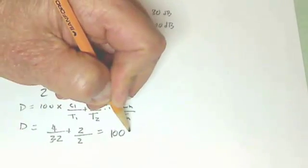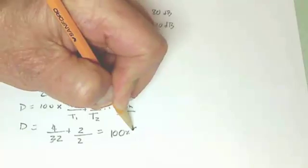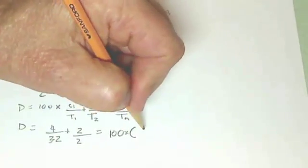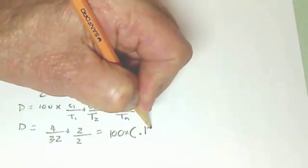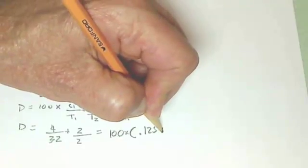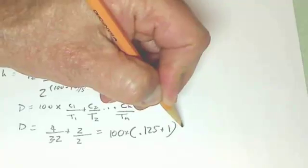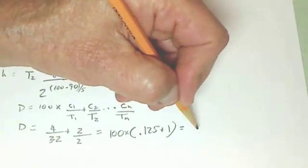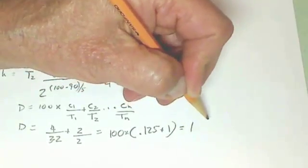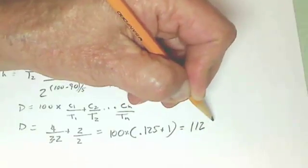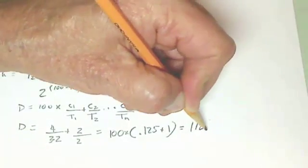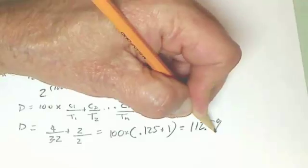So that should equal 100, which is in the formula, times 0.125 plus 2 over 2 is 1, so that should equal 112.5% like that.